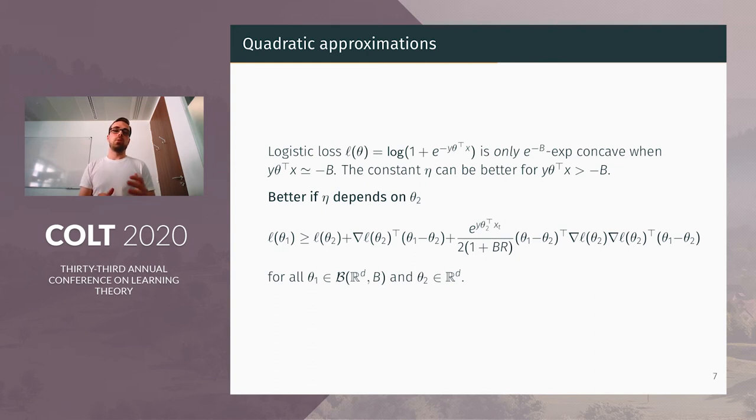So we can think that constant η can be much better when y·θ·x is bigger than minus B. If I make this statement more precise, and so if now we make η depend on θ_t, we can show the following inequality. If η is equal to exponential(y·θ_t) over 1 plus BR, the inequality is true. And we can see that η, of course in the worst case it would be of the order of exponential minus B, but if y·θ_t·x is bigger than minus B, then this η value can be much bigger.